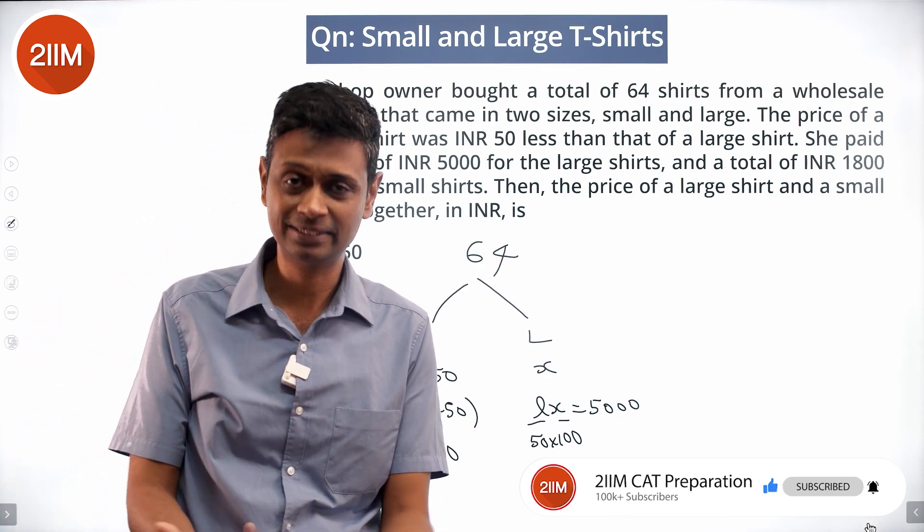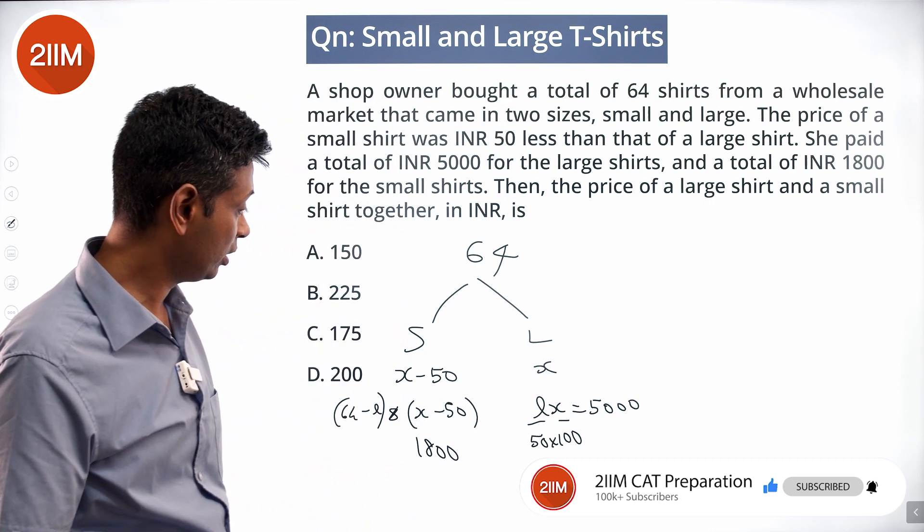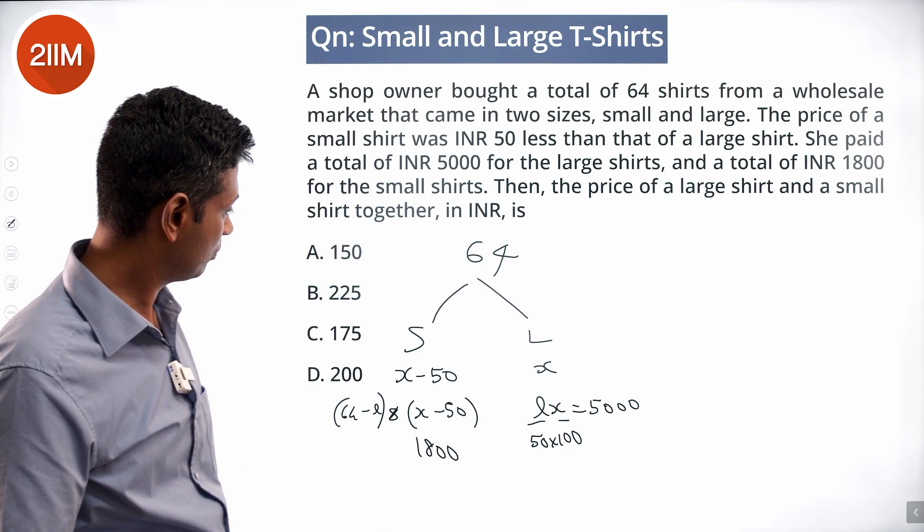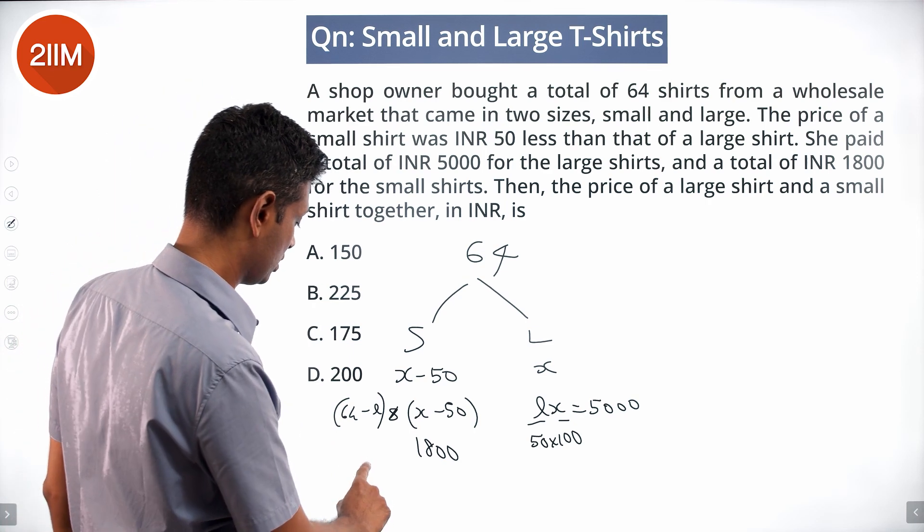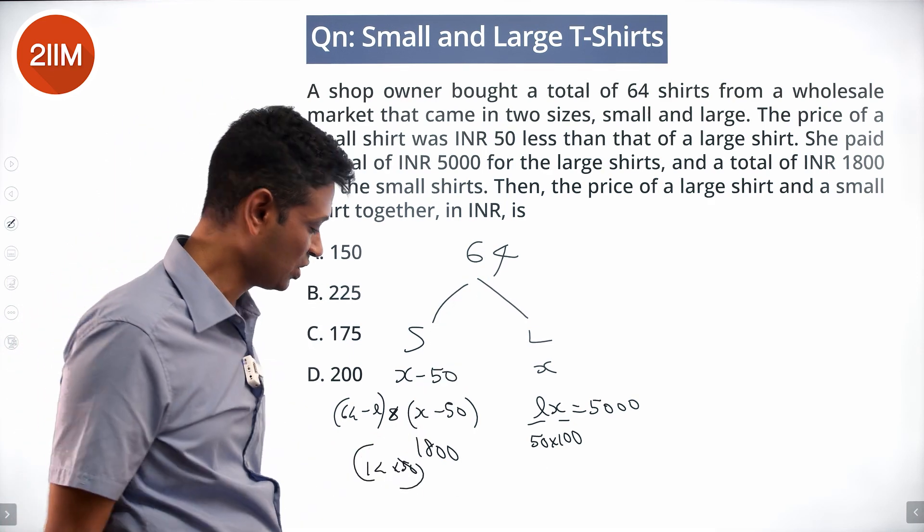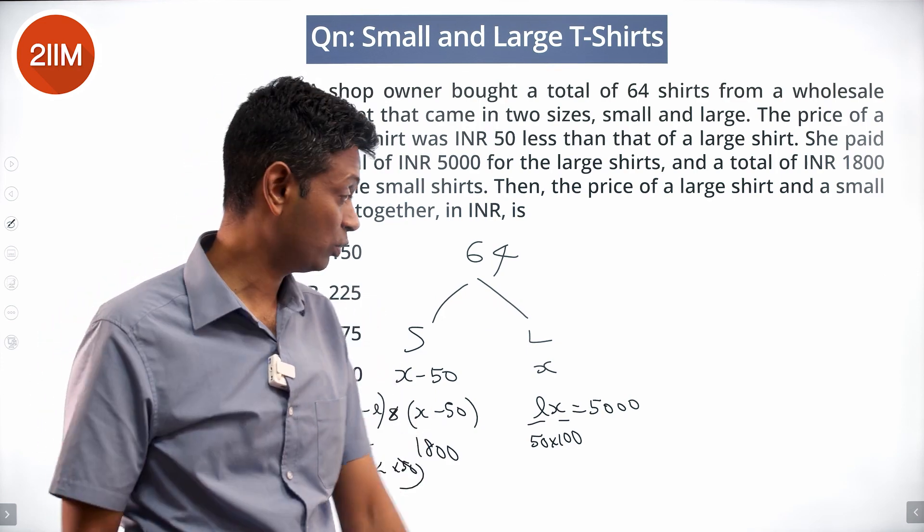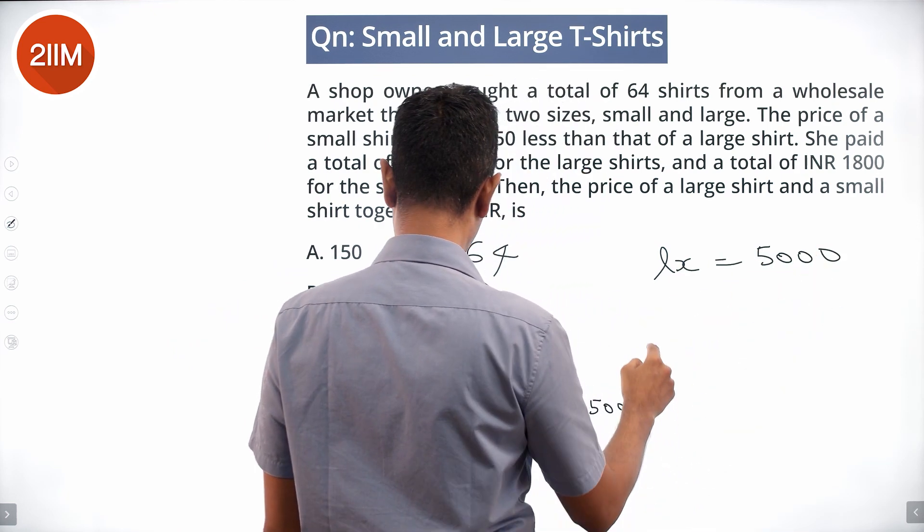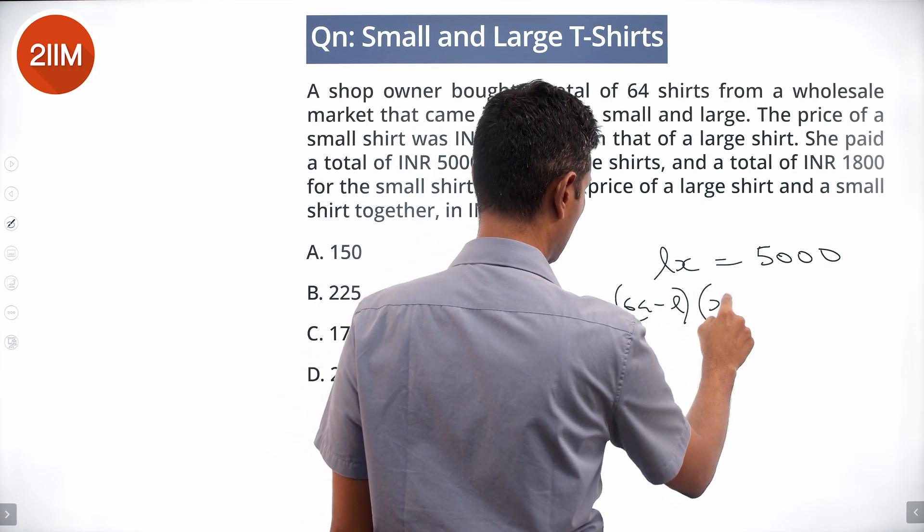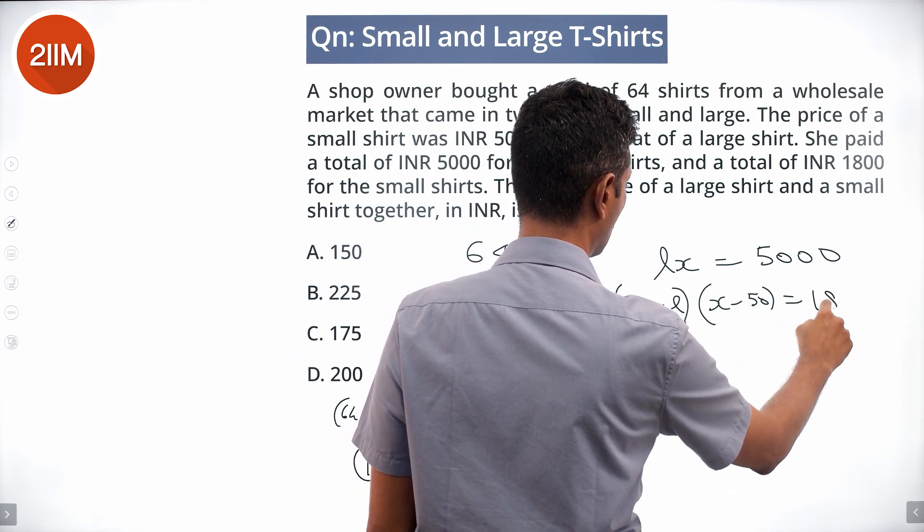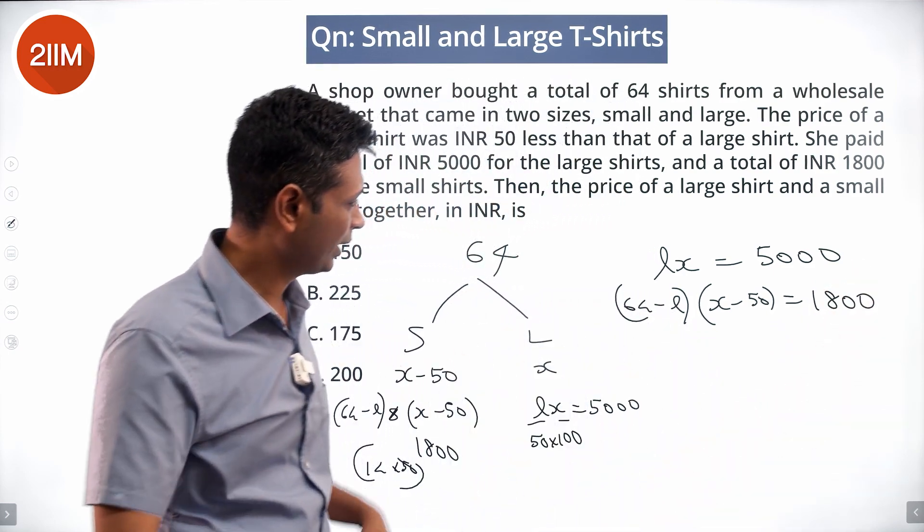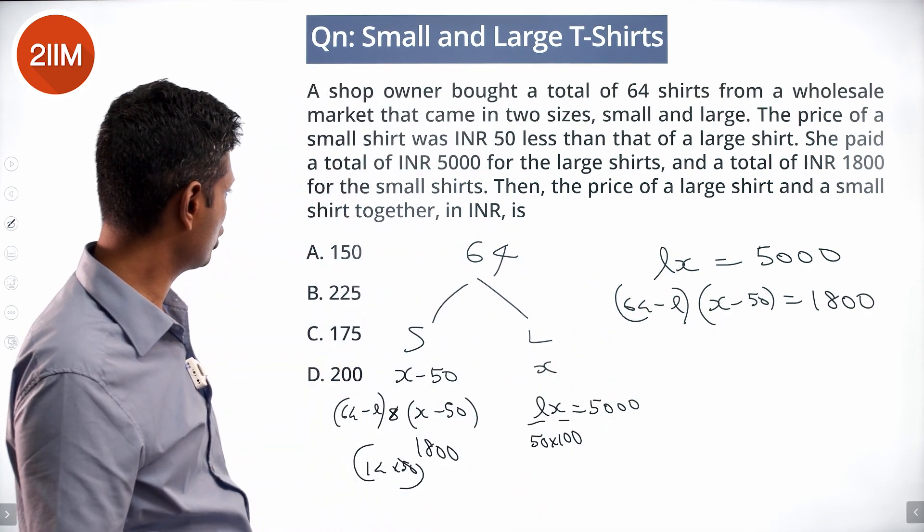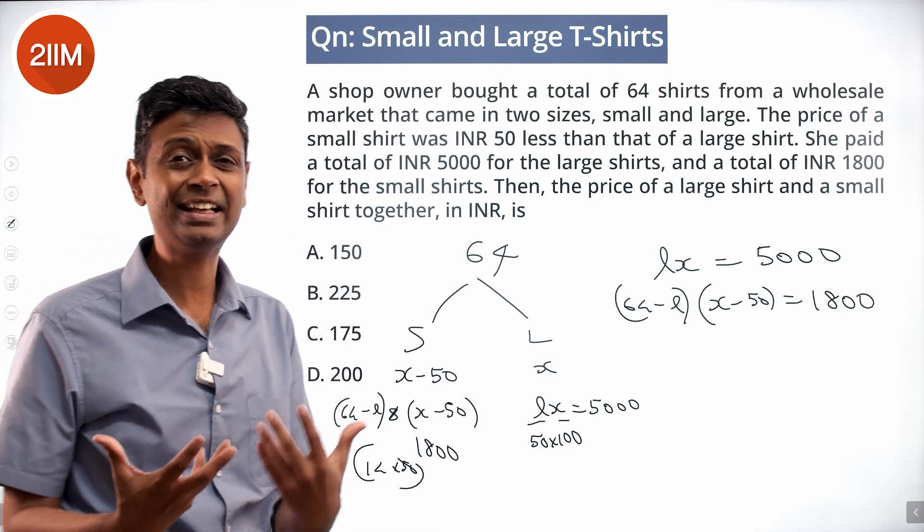If L is 50, X is 100, 64 minus L is 14 into 50. Nope, this doesn't work. This is only 700, we need to get 1800. So we need to work with this: L into X is 5000, 64 minus L into X minus 50 is 1800. We can substitute this, solve this, plug it in here and then simplify.